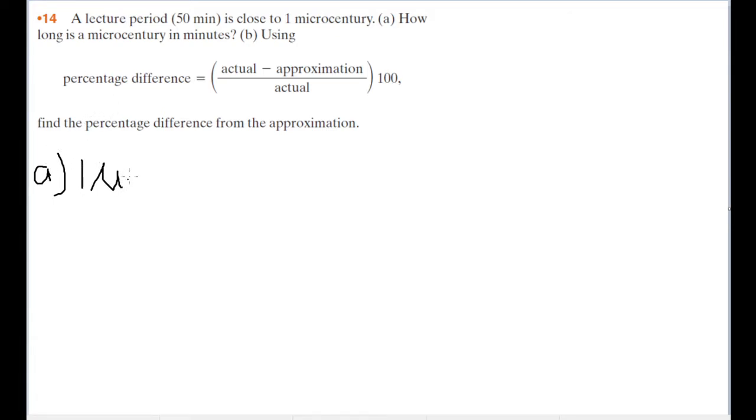So one micro century, let's all write it, is going to be equal to how many minutes? Now as you can see here from the word micro century, you've got the micro prefix here meaning millionths. So it's going to be equal to about 10 to the negative sixth of an actual century. So it's a millionth of a century in other words.